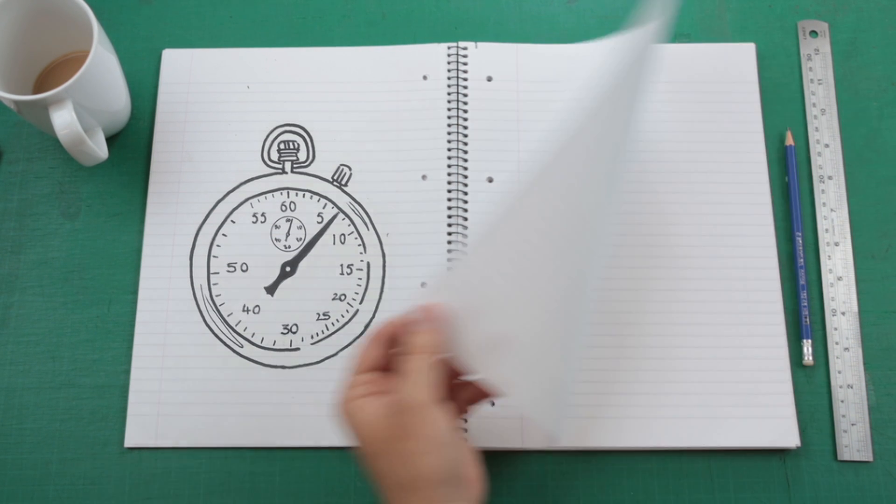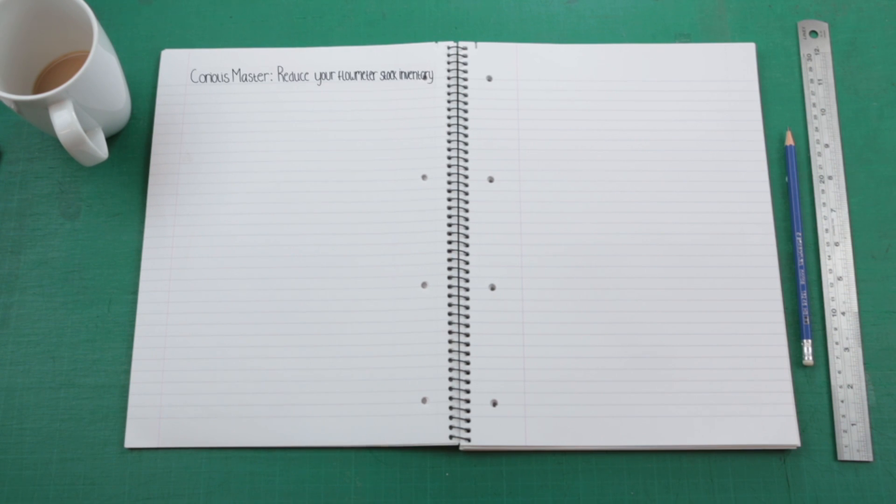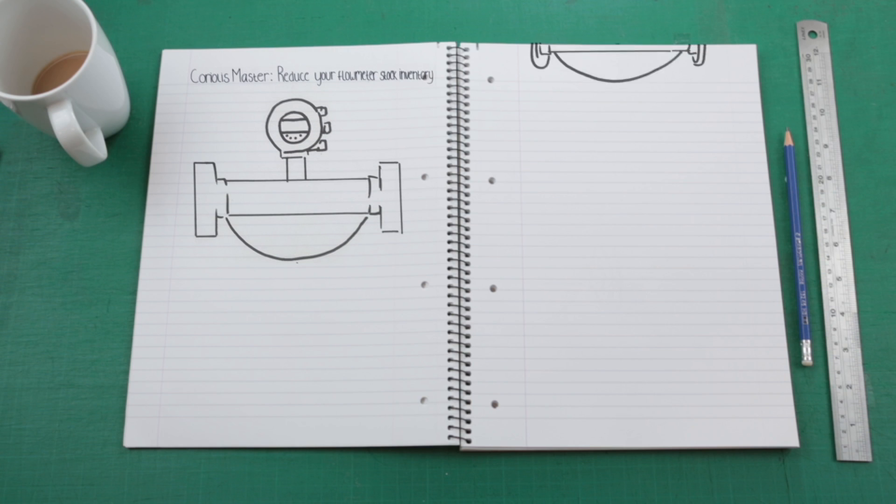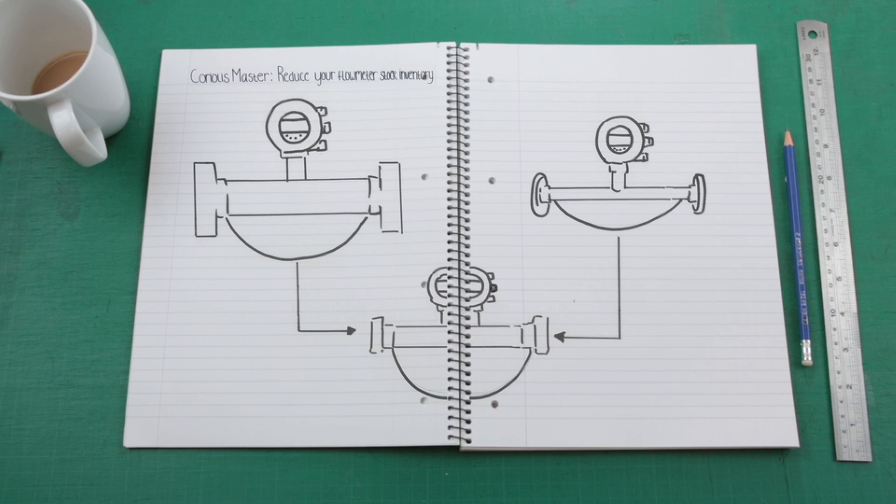As well as supreme accuracy, Coriolis master excels in other crucial areas too, with the biggest turndown ratio in its class, catering for a wider flow range than other meters, so you can often replace two existing meters with one Coriolis master.